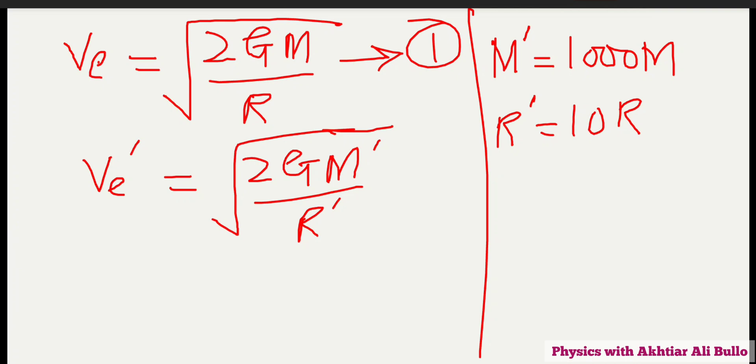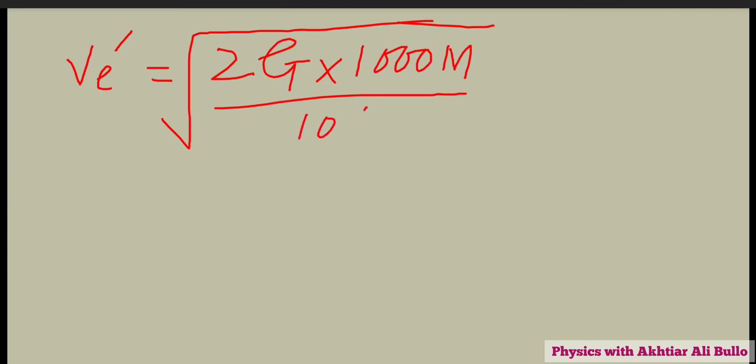By putting these values in equation number 2, ve dash will be equal to square root of 2G into 1000M divided by 10R. This zero will be cancelled with this zero, so ve dash will be equal to square root of 100 times 2GM upon R.